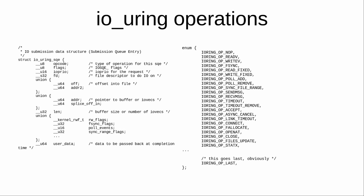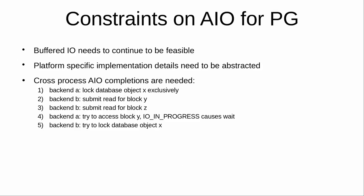Before going into how I'm using this in my prototype, it's important to figure out what the important design constraints are for a real production-level AIO support in Postgres. The first is that we need to continue to support buffered IO. The second is that we need to abstract away the platform-specific details, because we cannot leak all that across all of Postgres — we start IO in lots of places: during DDL, query execution, backup, checkpointing. If all those places know about all the platform-specific stuff, it will be a mess. All of that needs to be hidden in a fairly small place.